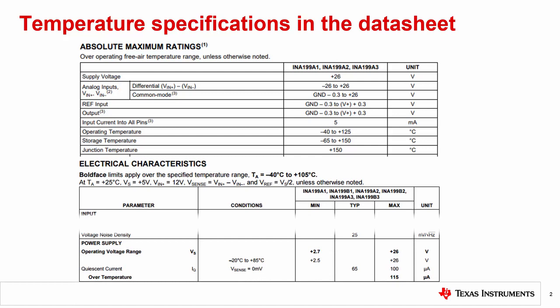Beyond the ABS-MAX table, you will see the electrical characteristics table. Above the table, you should see a temperature or temperature range over which the majority of the table specification measurements were collected. For specifications collected over a different range, you will see some temperature range specified in the conditions column.